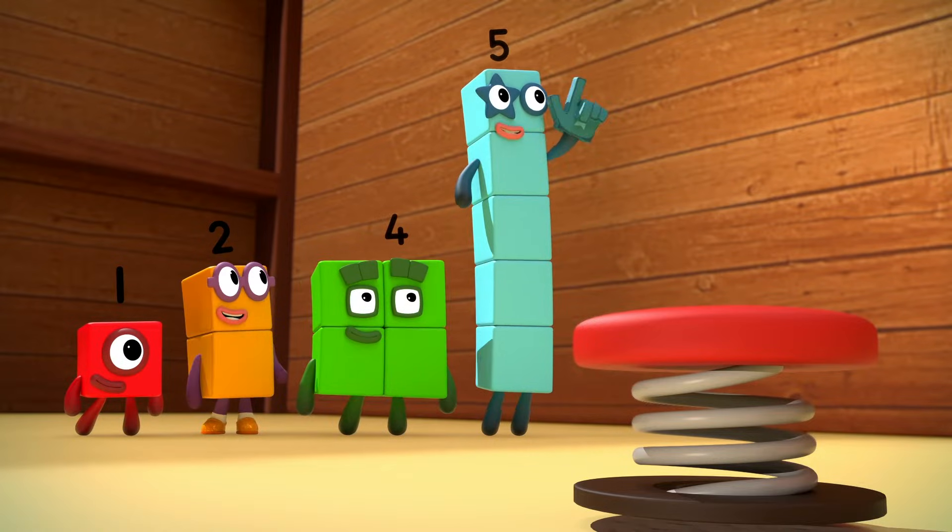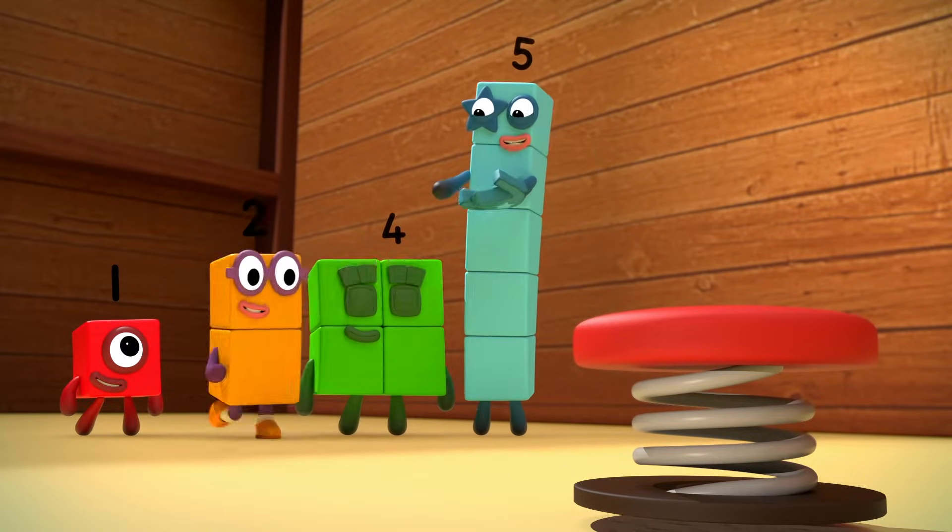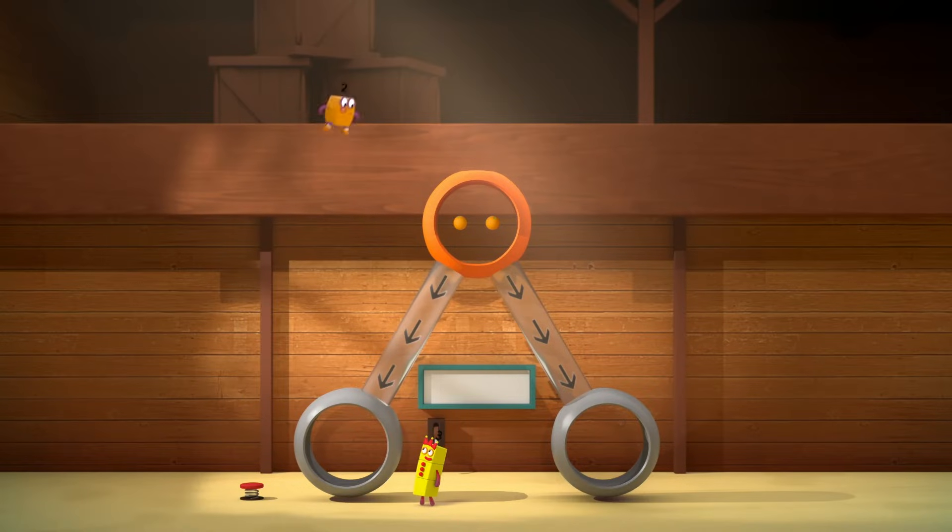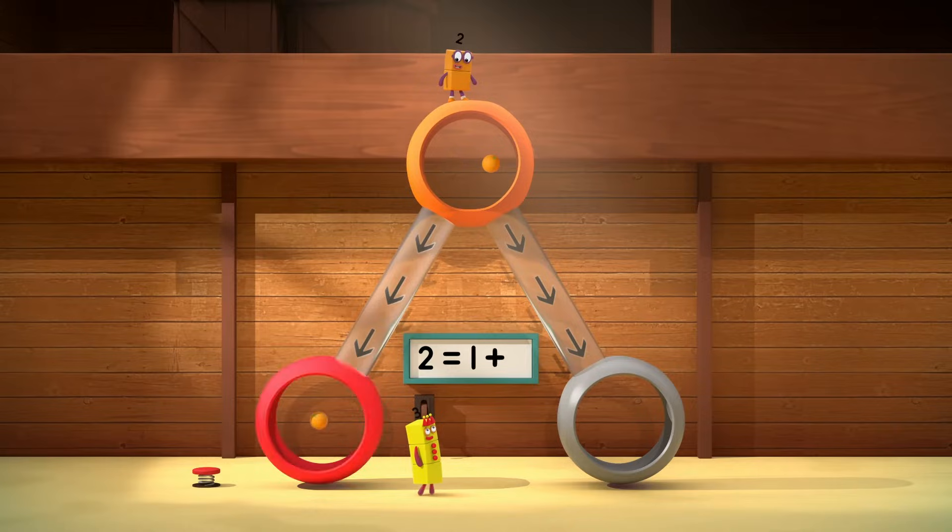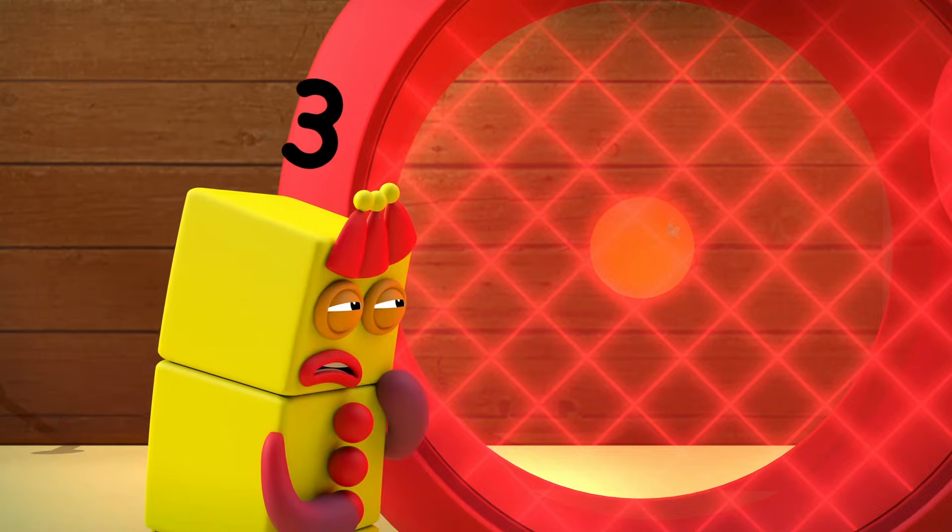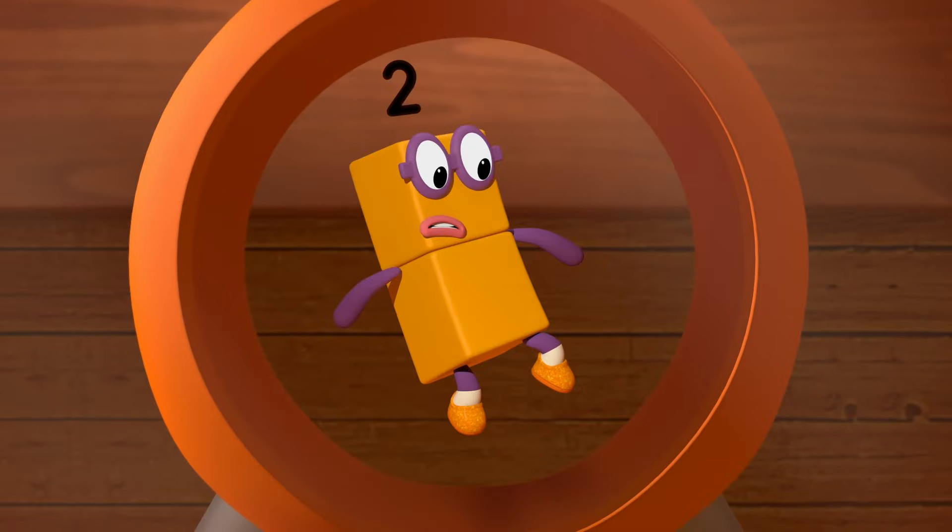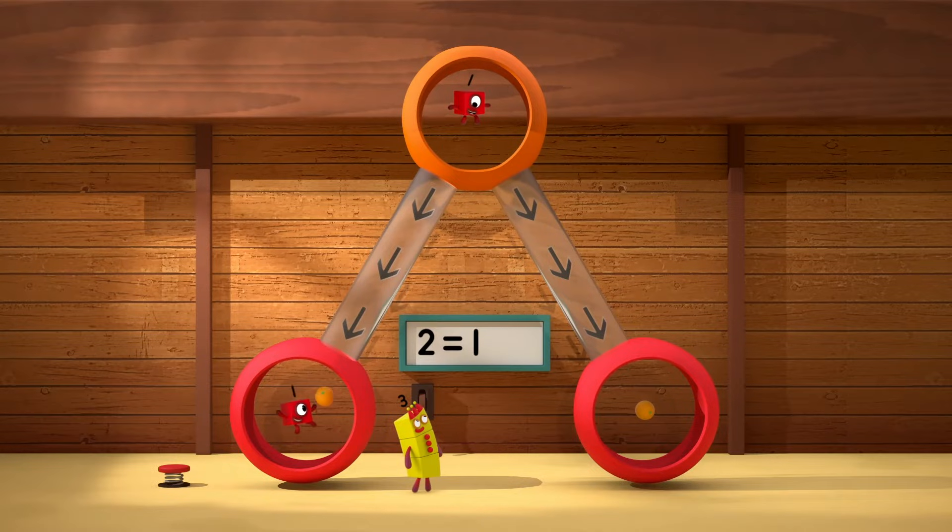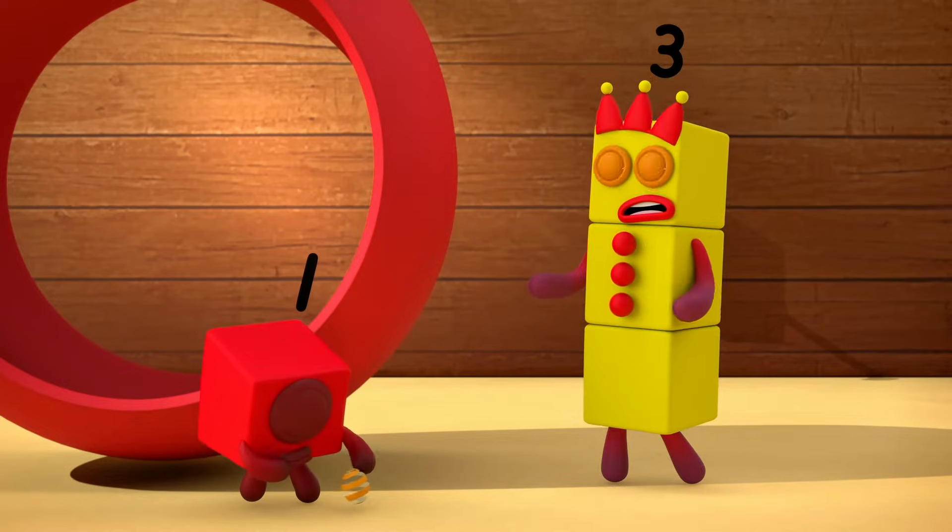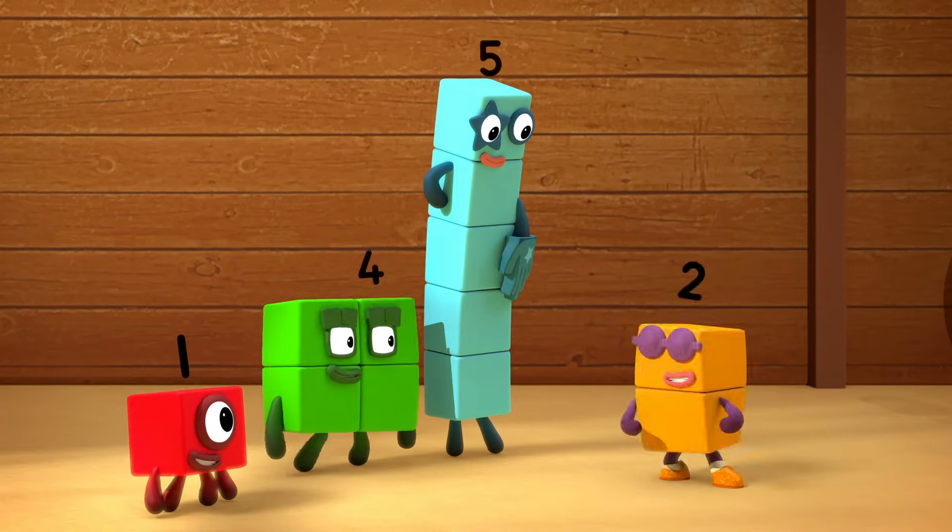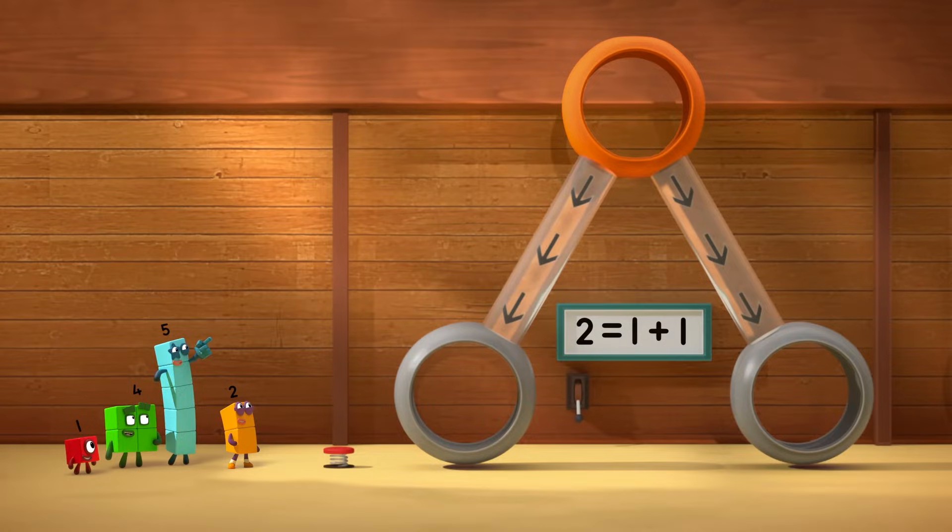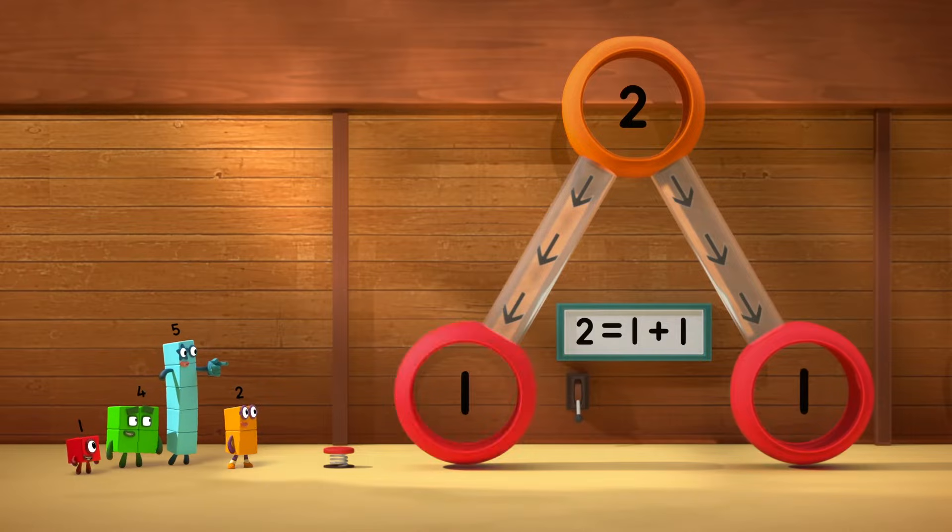There are two oranges in there. Maybe if two tries it. Two equals one plus one. How do I... Two equals one plus one. Ta-da! Look! Two at the top splits into one and one at the bottom.